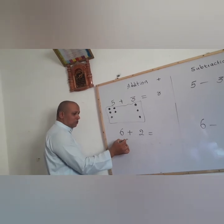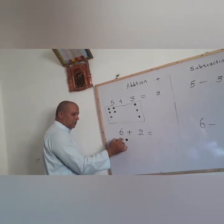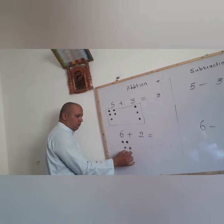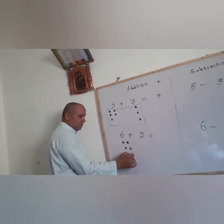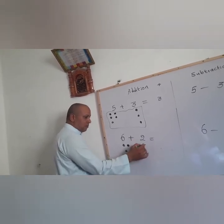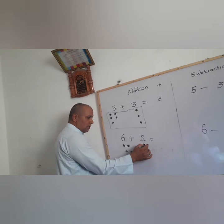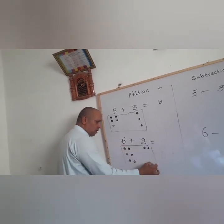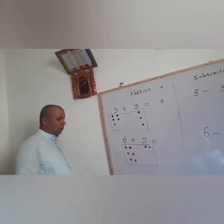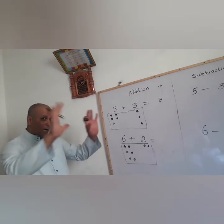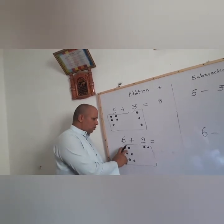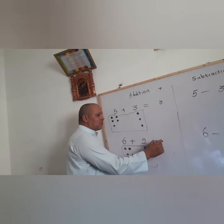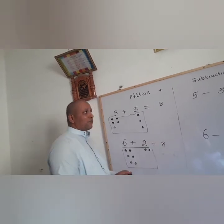We need to put 6 counters here: 1, 2, 3, 4, 5, 6. And for this number, we're going to put 2 counters here. You need to put them all together in a rectangular shape and just count them together: 1, 2, 3, 4, 5, 6, 7, 8. So the answer here will be 8.